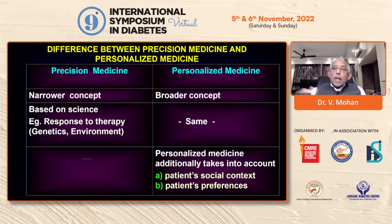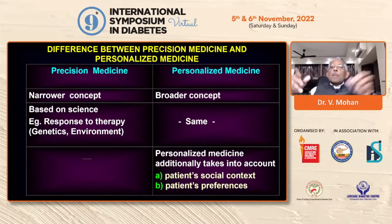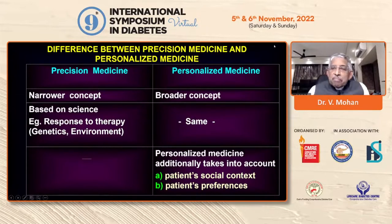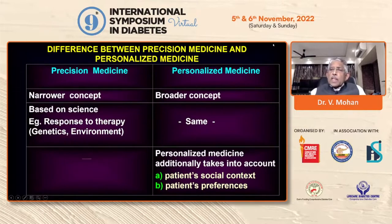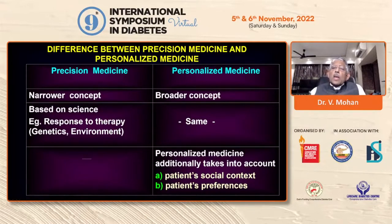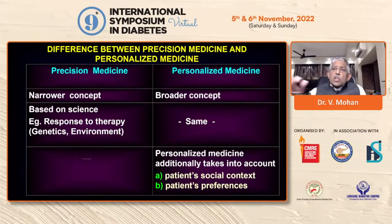There are lean people and there are obese people, so different kinds of treatment. A colleague of mine came up after the talk and said, 'Why are you confusing everyone? Give everyone metformin — that doesn't work, give sulfonylurea — that doesn't work, give DPP4 — that doesn't work, give something else. If nothing else works, give insulin. Very simple. Why are you confusing the world saying there are so many types of diabetes?'